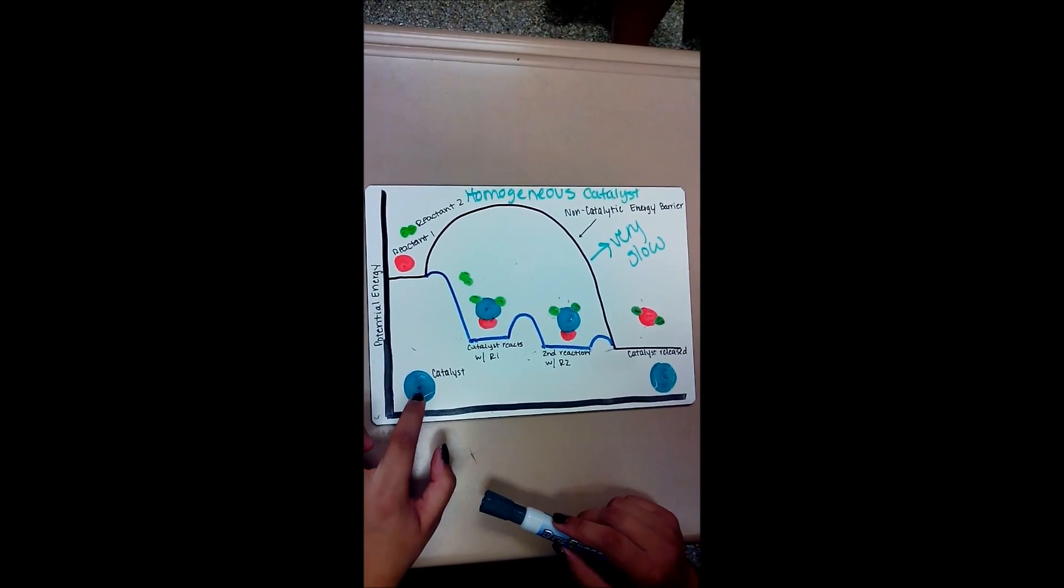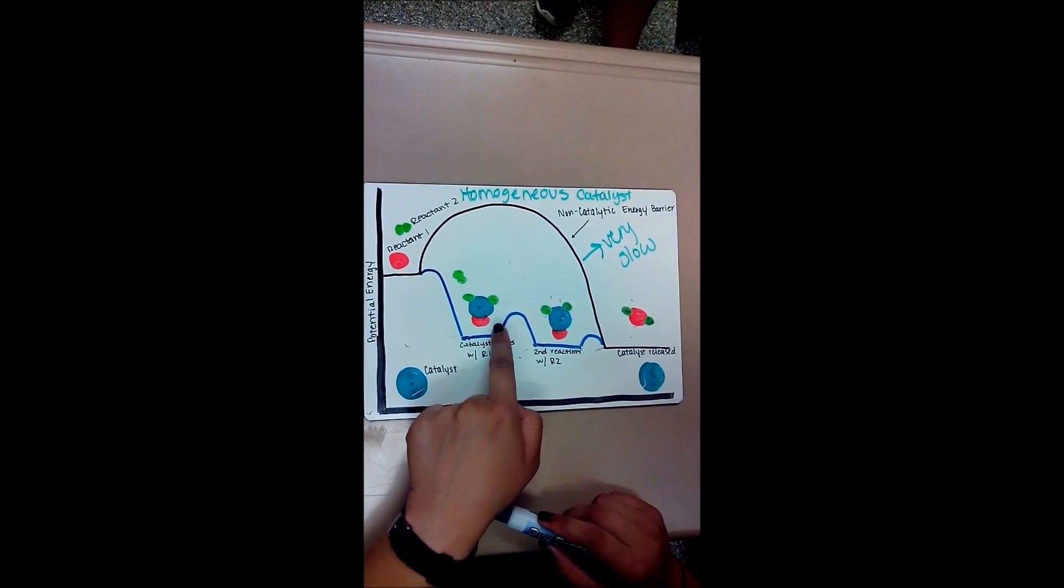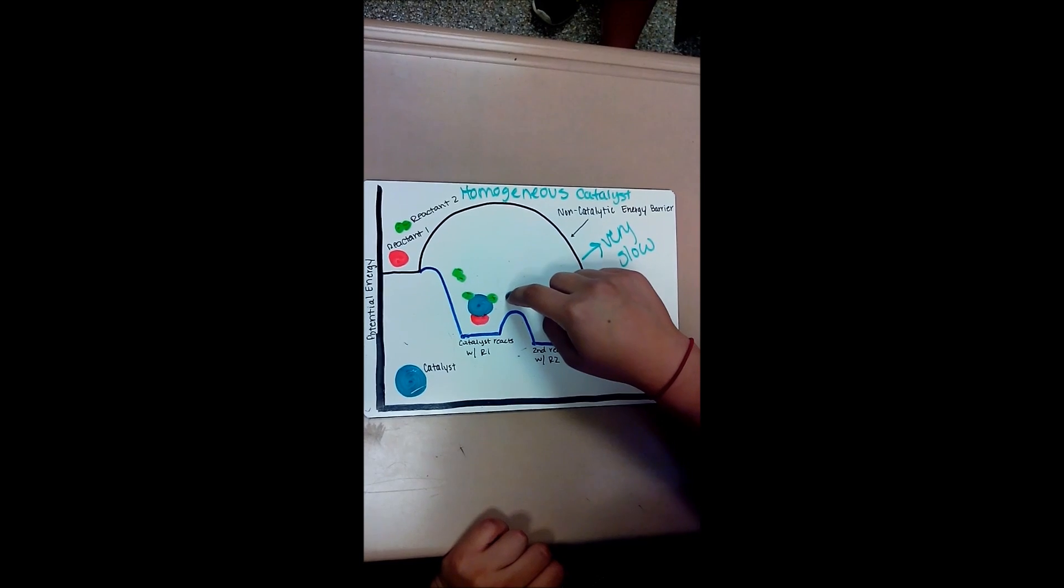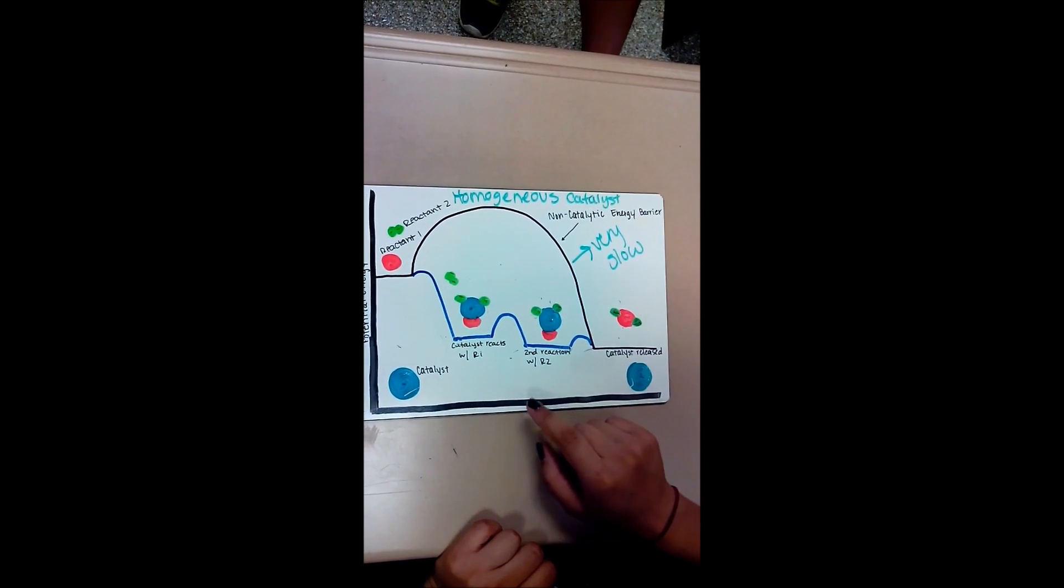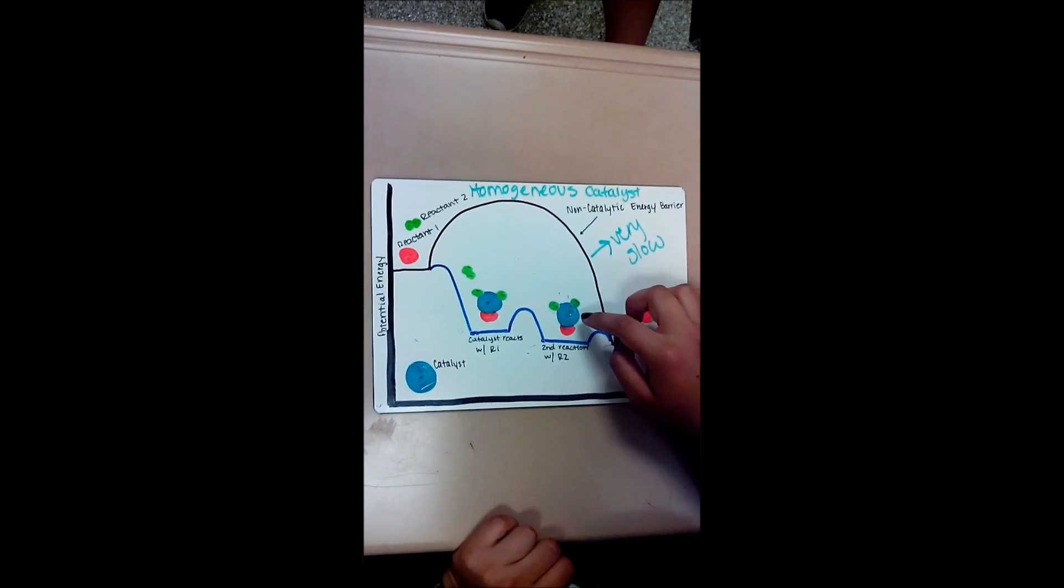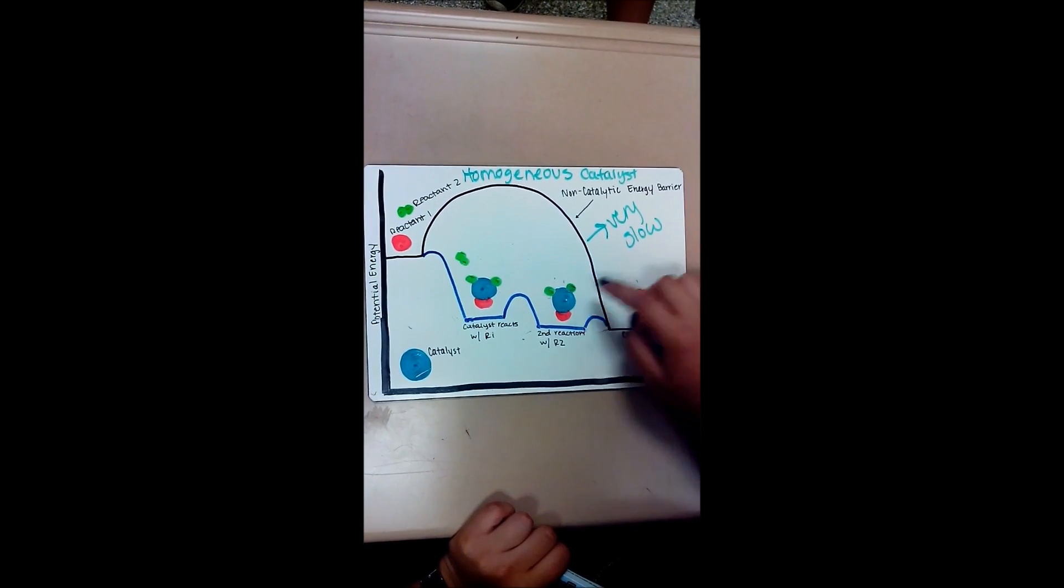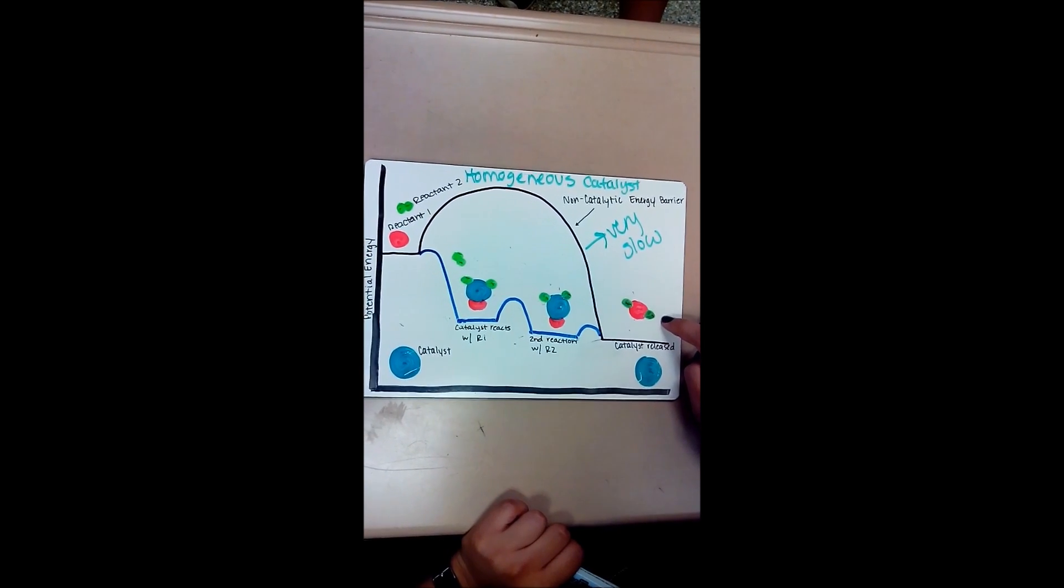It lowers the activation energy. And here is what the catalyst with the reactant with R1 would be, which is there. And then it lowers the activation energy even more until it's binded to this. And then we have the final product here without the catalyst.